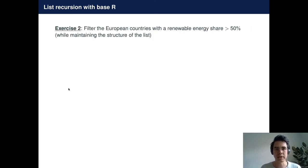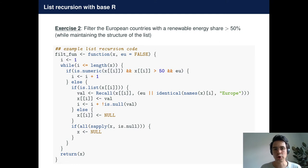As another example, let's say that we want to filter all countries that are located in Europe with a renewable energy share above 50% while still maintaining the structure of the list. So now we can no longer use the RApplied function, and instead we have to write our own list recursion code.